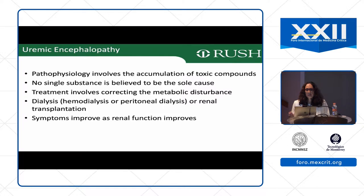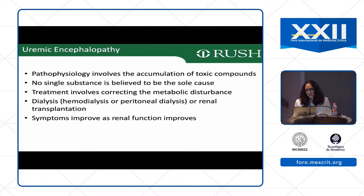Uremic encephalopathy is related to the accumulation of toxic compounds, and no single substance is believed to be the sole cause. Treatment involves correcting the metabolic disturbance; dialysis or renal transplantation is the way to go, though dialysis corrects this in a much smoother form. These patients do recover from this encephalopathy — so if this is the cause of the coma, patients actually fare quite well.